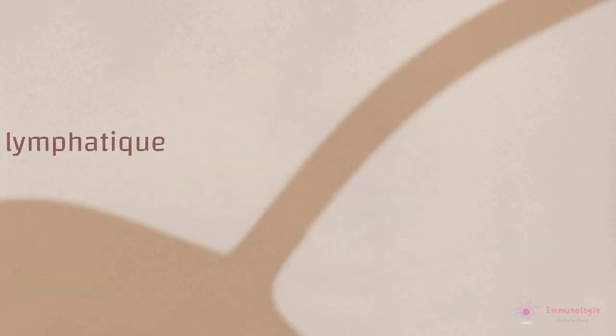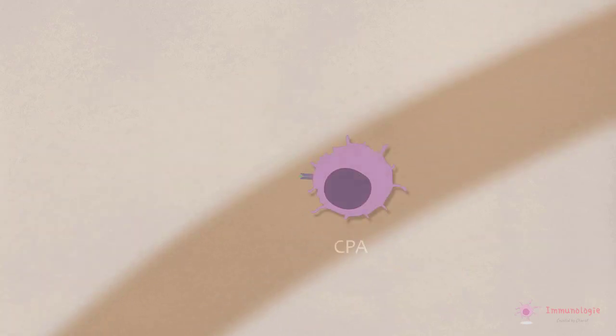Certains antigènes sont transportés dans la lymphe par des cellules présentatrices d'antigènes, dont nous avons parlé dans la vidéo précédente. Les cellules dendritiques sont les CPA les plus aptes à capturer, transporter et présenter des antigènes aux lymphocytes T. D'autres antigènes pénètrent dans les lymphatiques sous forme libre ou acellulaire.